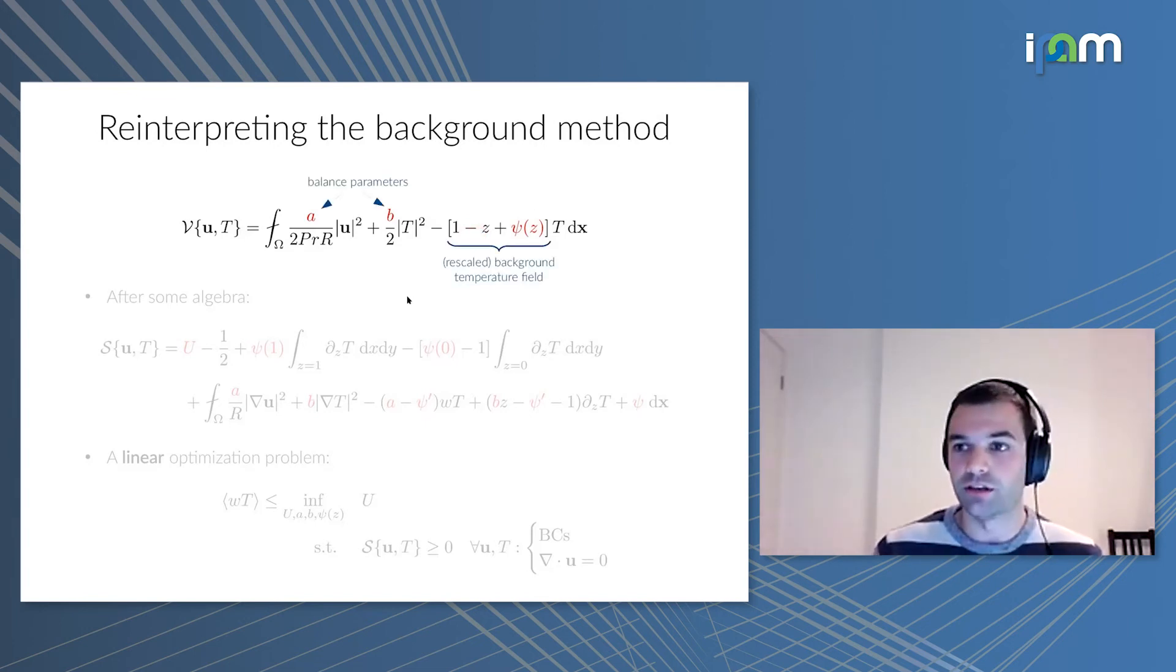I won't go into details of how this connects to the classical formulation of the background method, but I'll mention that this a and b, if you're familiar with the background method terminology, are just the balance parameters. Whereas this function 1 minus z plus psi is related to the background temperature field by rescaling. In particular, this function divided by b is exactly the background temperature field.